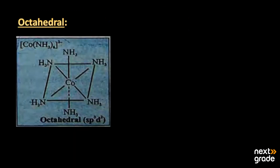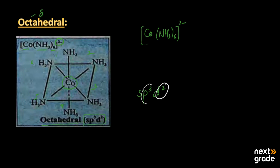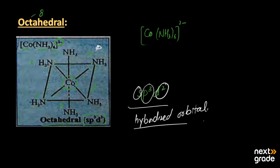The last geometrical shape is octahedral. Octa means eight, so this has eight corners. The example is cobalt hexaammine [Co(NH3)6]²⁺ — six amino groups are attached to the central cobalt atom, making an octahedral structure. The hybridization is sp3d2 — two d, three p, and one s orbitals combine to form hybridized orbitals, creating the octahedral geometry.